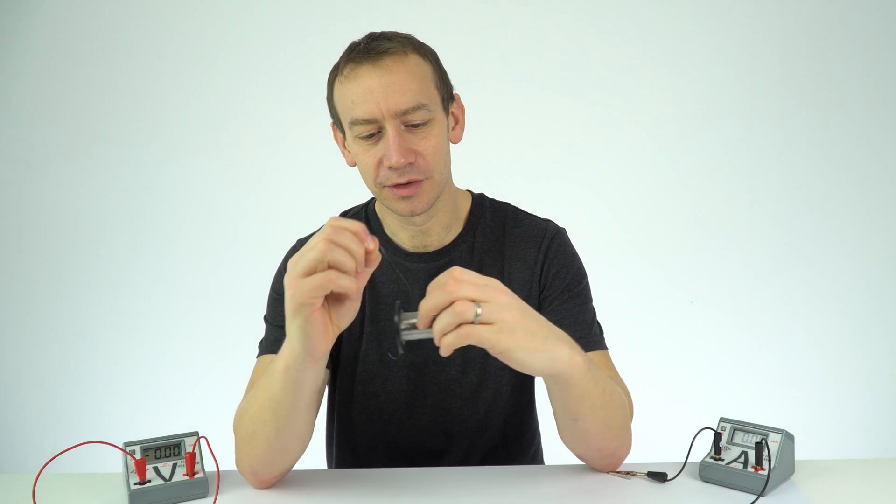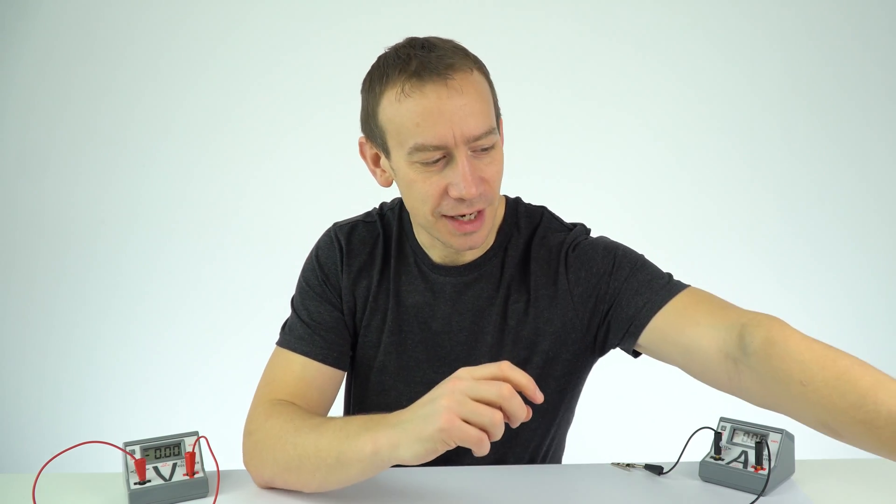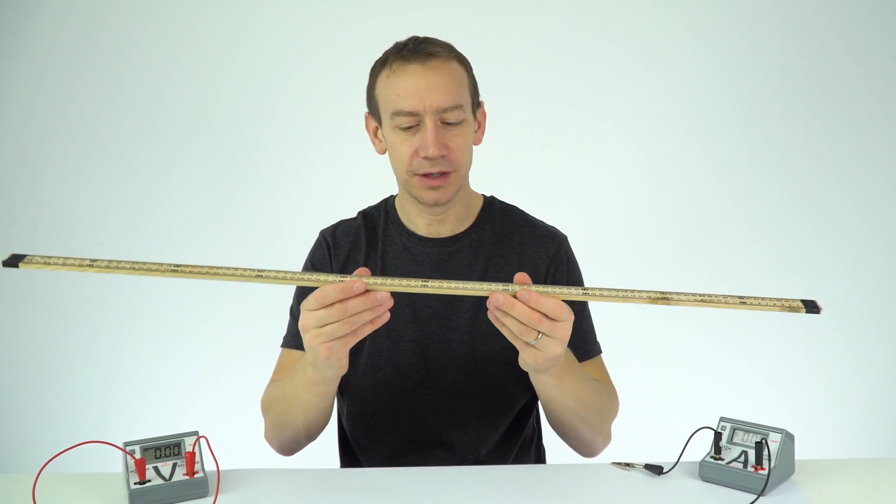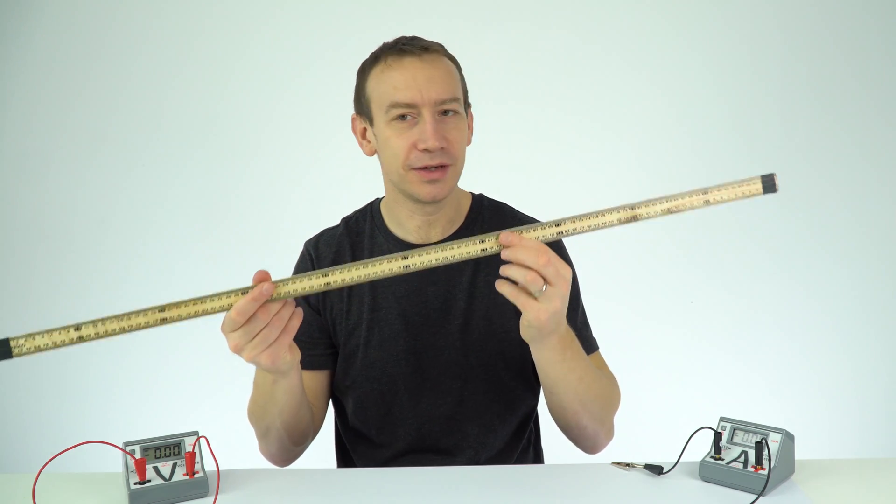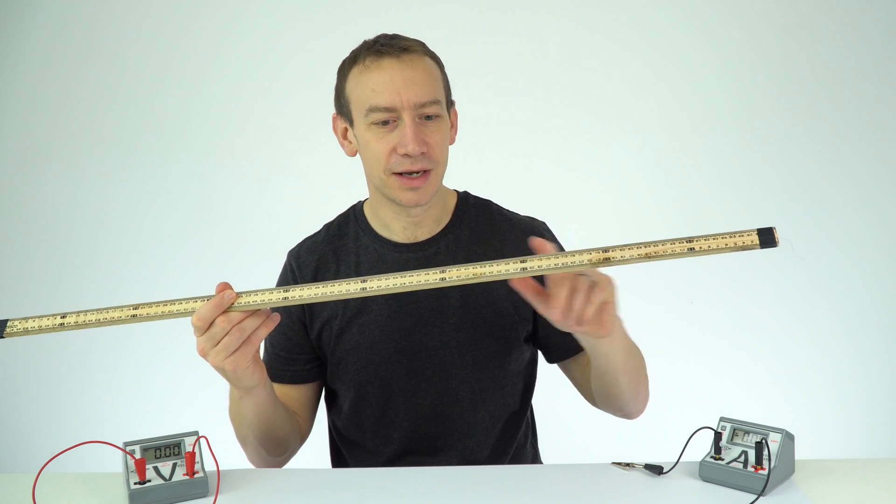So this wire here is called constantin and I'm going to actually attach a piece of this wire to a meter ruler just with a bit of tape at each end and this makes it a lot easier to measure the length.